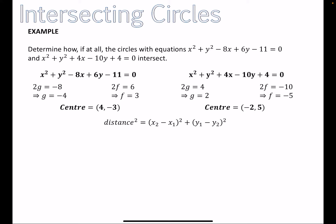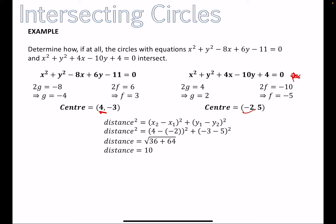For the distance between the centers we use the distance formula — it's very similar to the circle formula. We get (4 − (−2))² plus (−3 − 5)², which is 6² + 8² = 36 + 64 = 100, so the distance d = √100 = 10.